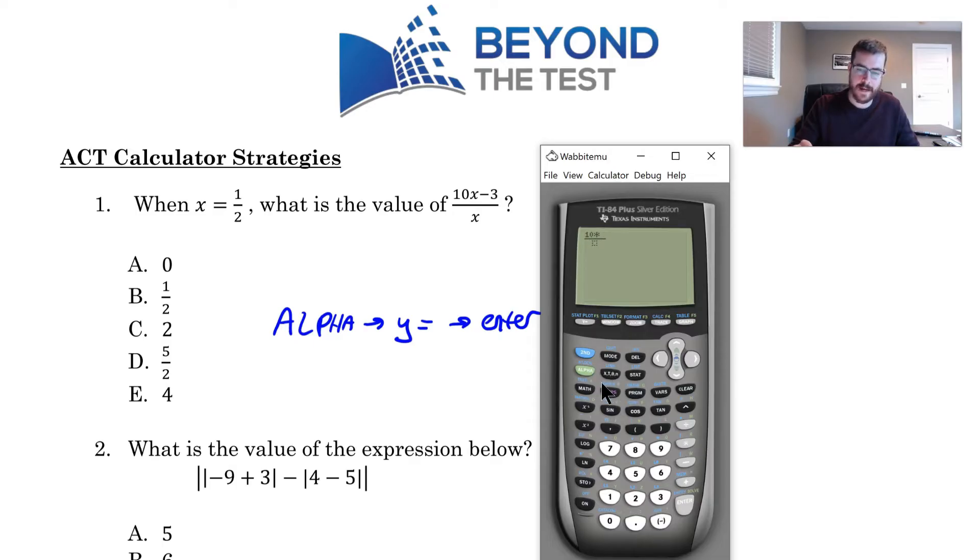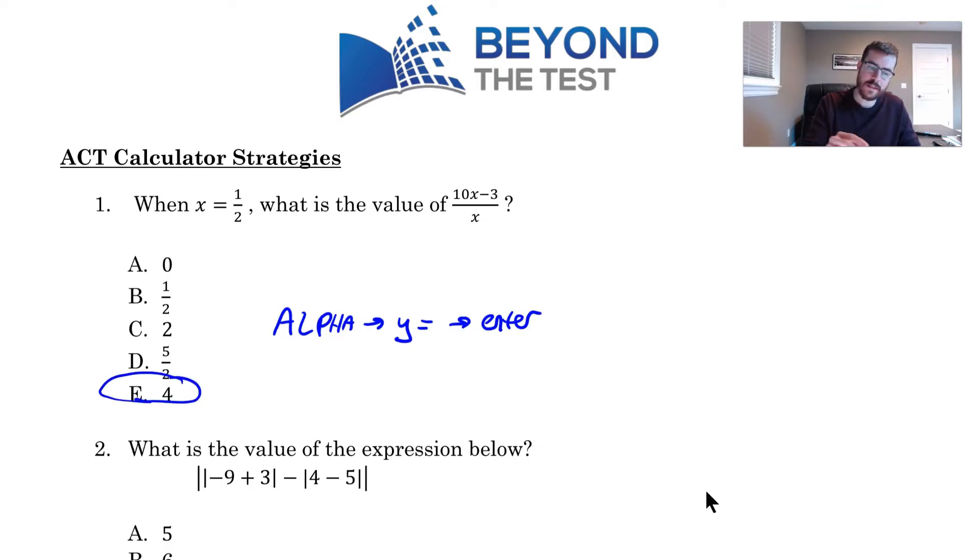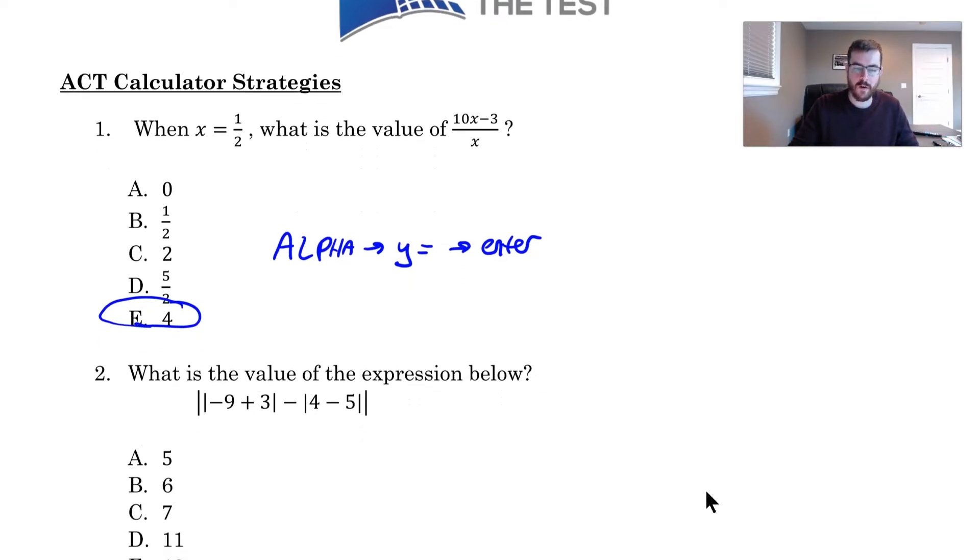So I want to put in 1 half for x here. I'm going to put alpha y equals enter, 10 times 1 over 2 minus 3, and then we go down to the bottom, put alpha y equals enter again, and then 1 over 2. So you can put fractions in and see the answer here is just 4, which is choice E. This is a very basic one. A lot of you probably already know that trick.